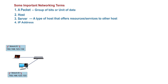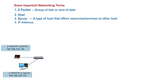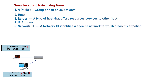Fourth, IP address. IP stands for Internet Protocol. An IP address is a numerical label assigned to each device connected to a computer network. We shall extensively look at IP addresses, the types we have, and how to assign them in subsequent videos. An IP address consists of two components: a network ID and a host ID. A network ID identifies the specific network to which a host is attached, while a host ID uniquely identifies a host within a network.